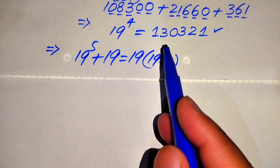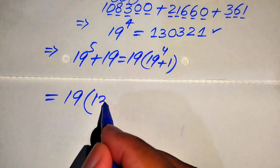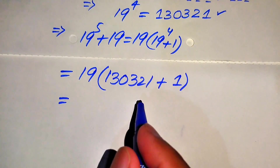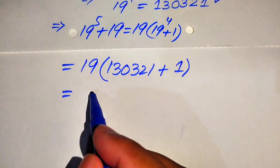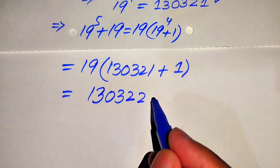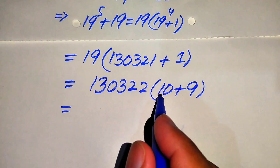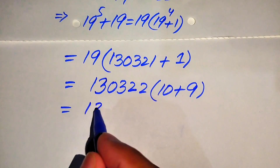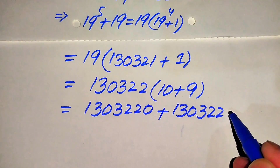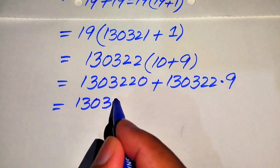We first add the values inside the parentheses: 130321 plus 1 equals 130322. So we need to compute 19 times 130322. We write 19 as 10 plus 9, and multiply 130322 by each part separately: 130322 times 10 gives 1303220, and then we multiply 130322 by 9.